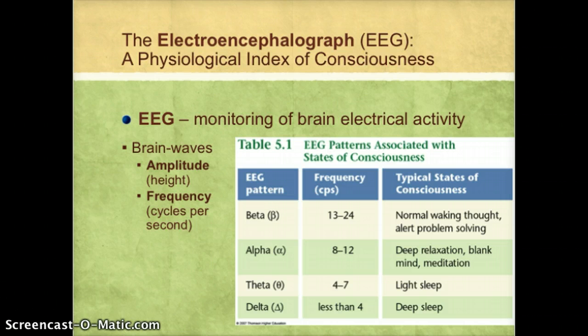The two other types of brain waves are associated with sleep. Theta brain waves are associated with light sleep, and delta brain waves are associated with deep sleep, sometimes called deep slow wave sleep.